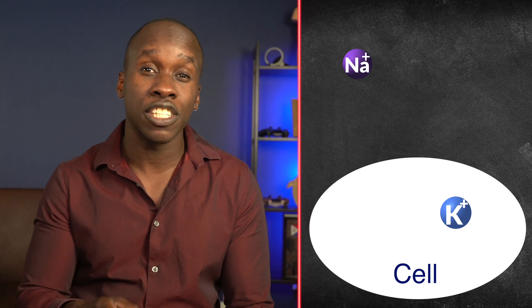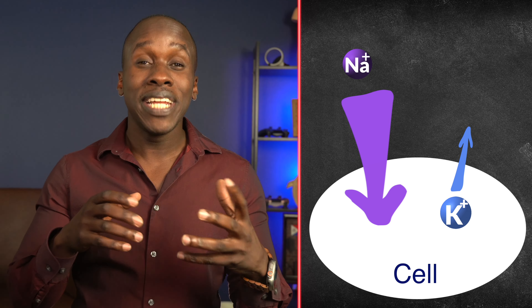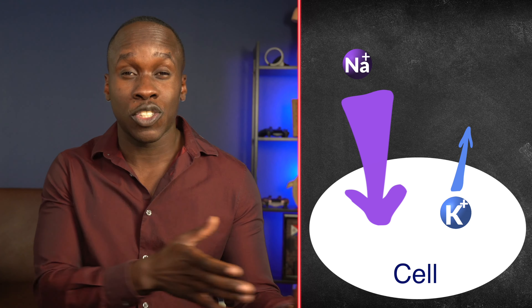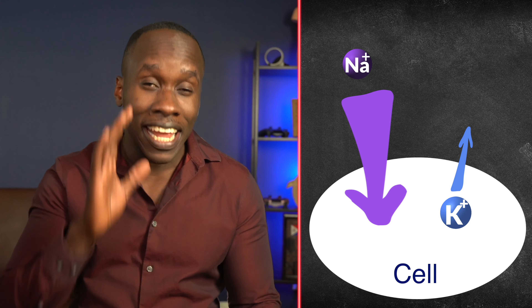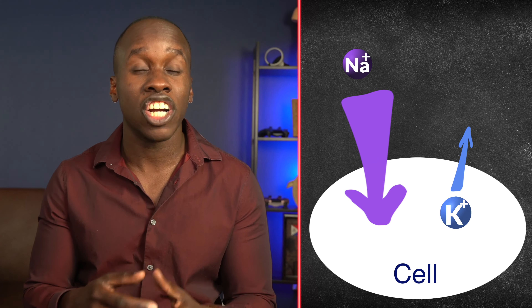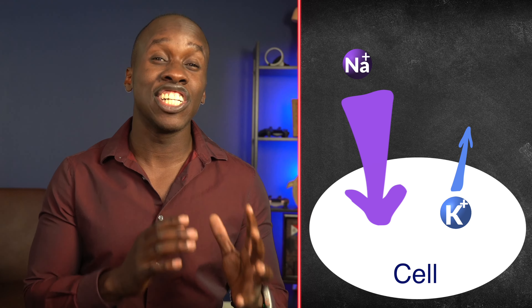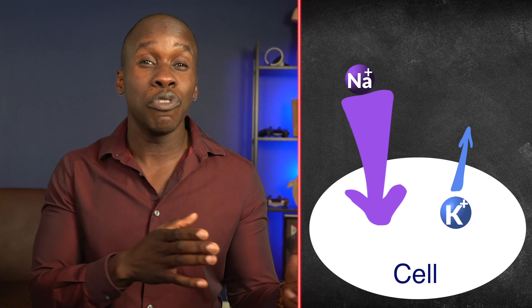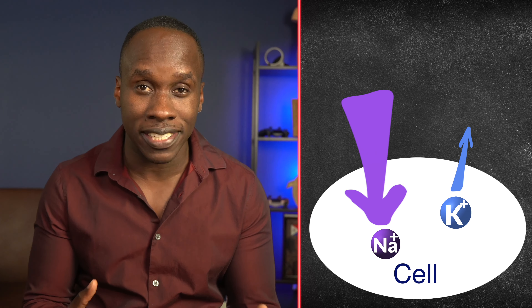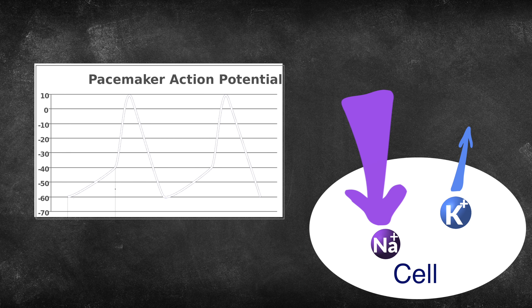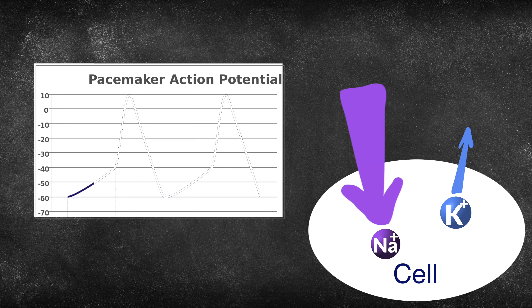The cells that make up the SA node are very interesting. They allow certain ions like sodium and potassium to pass through in different ways. Normally, there's a higher conductance for sodium ions than for potassium ions, meaning it's much easier for sodium ions to move across the membrane. Sodium is a positively charged ion that's normally concentrated outside the cell, so it starts moving down the concentration gradient into the cell.